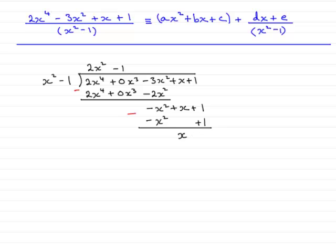So what I have now is that I can rewrite this fraction, let's just come down here, I can say therefore, 2x to the power of 4 minus 3x squared plus x plus 1, all divided by x squared minus 1,